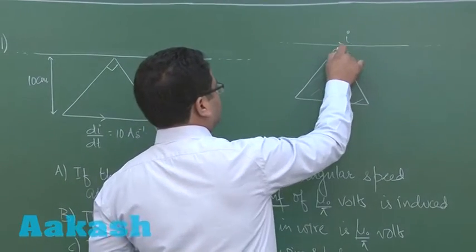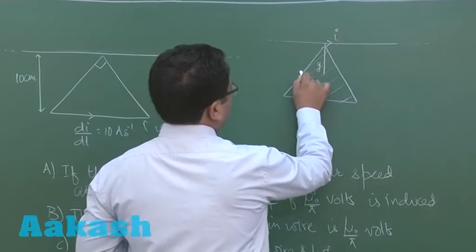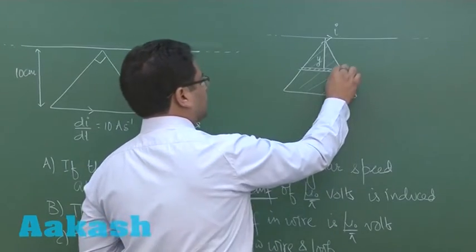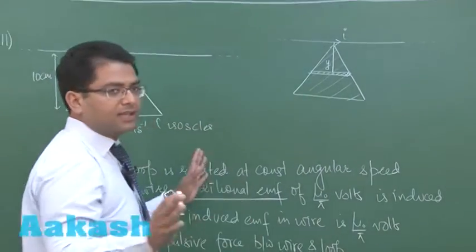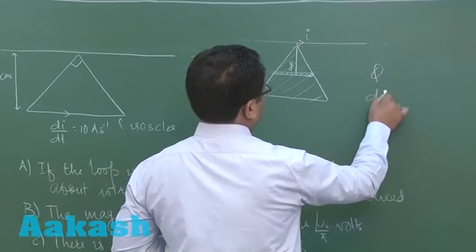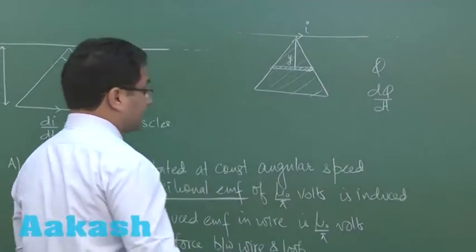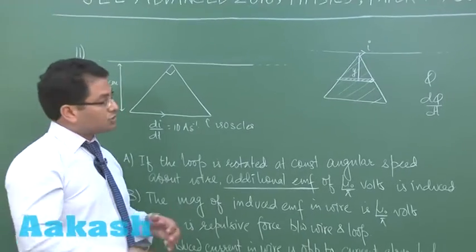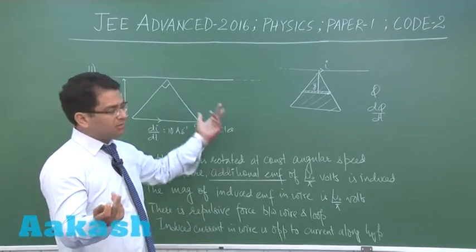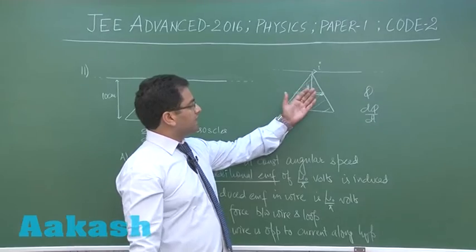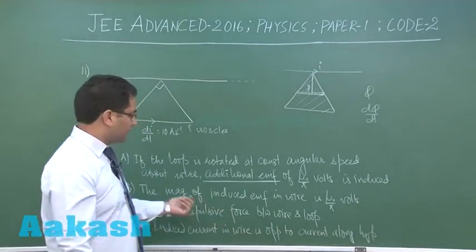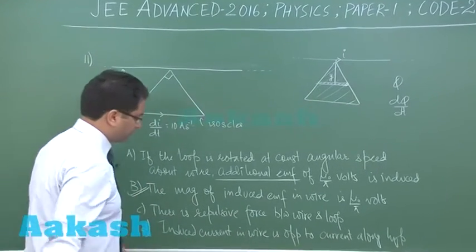At a distance y, you can consider a strip and easily calculate the flux through that strip, then integrate — a very simple approach. When you calculate that flux φ and differentiate it, dφ/dt gives exactly μ₀/π. So trickily, we use reciprocity: instead of calculating the flux on the wire (which would be nearly impossible), we pass current through the wire, calculate flux through the loop, and since the values are the same, dφ/dt is the correct result.